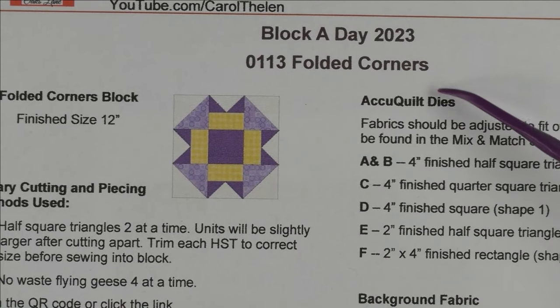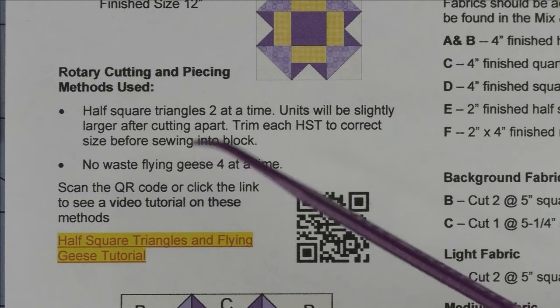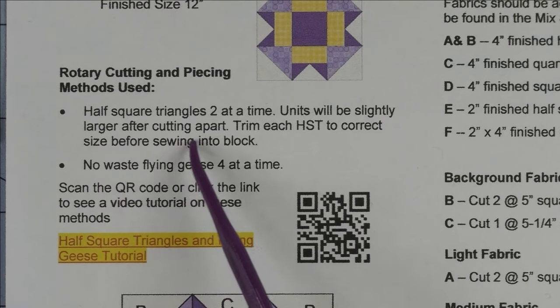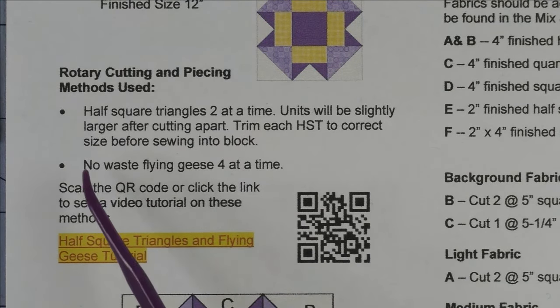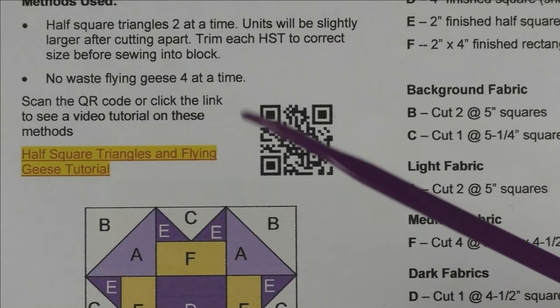This is the folded corners block and it finishes at 12 inches. We're going to use the method of half square triangles two at a time and the no waste flying geese four at a time. If you're not familiar with these methods...